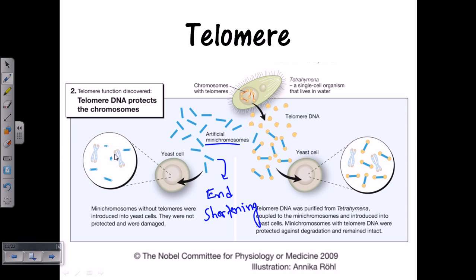In a second experiment, they took these artificial mini chromosomes and cut out telomeric DNA from another organism — for example, Tetrahymena — and added it to both ends of the artificial mini chromosomes. Then they re-injected these mini chromosomes into yeast cells. After certain rounds of cell division, those chromosomes remained intact — they didn't lose any DNA from the terminal end — demonstrating the importance of telomeric DNA in preventing chromosome damage.